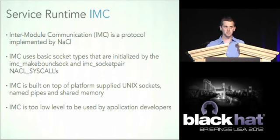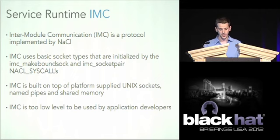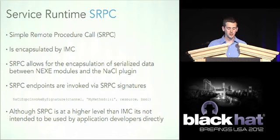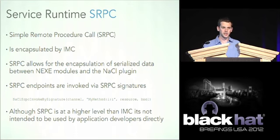The service runtime implements IMC — a very low-level protocol — using two syscalls: imc_make_bound_sock and imc_socket_pair. These ride on top of OS-supplied interfaces like Unix sockets, named pipes, and shared memory, depending on the platform. SRPC rides on top of IMC and is a higher-level layer that serializes data like PP_Vars. SRPC endpoints are invoked via a simple API — you pass the SRPC channel, a string describing the interface, the arguments, and their types.